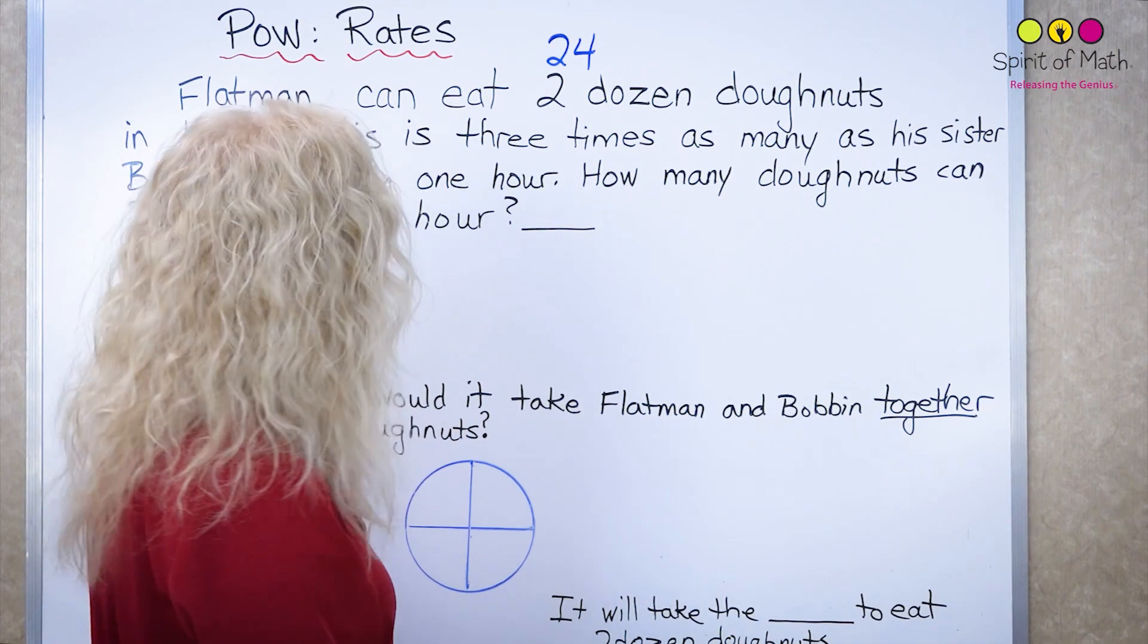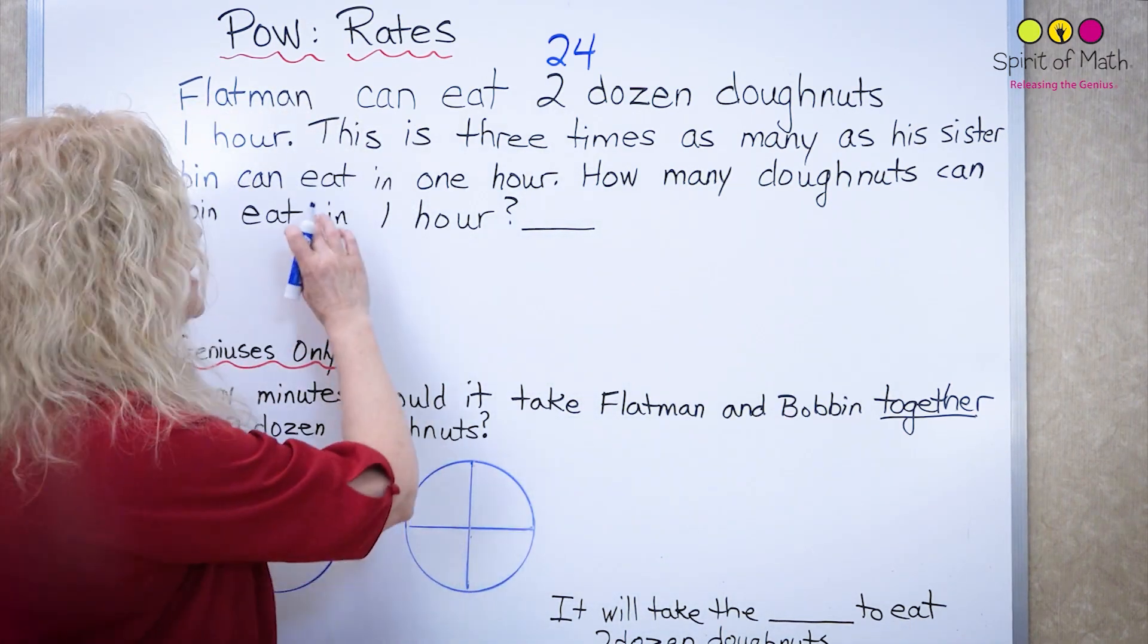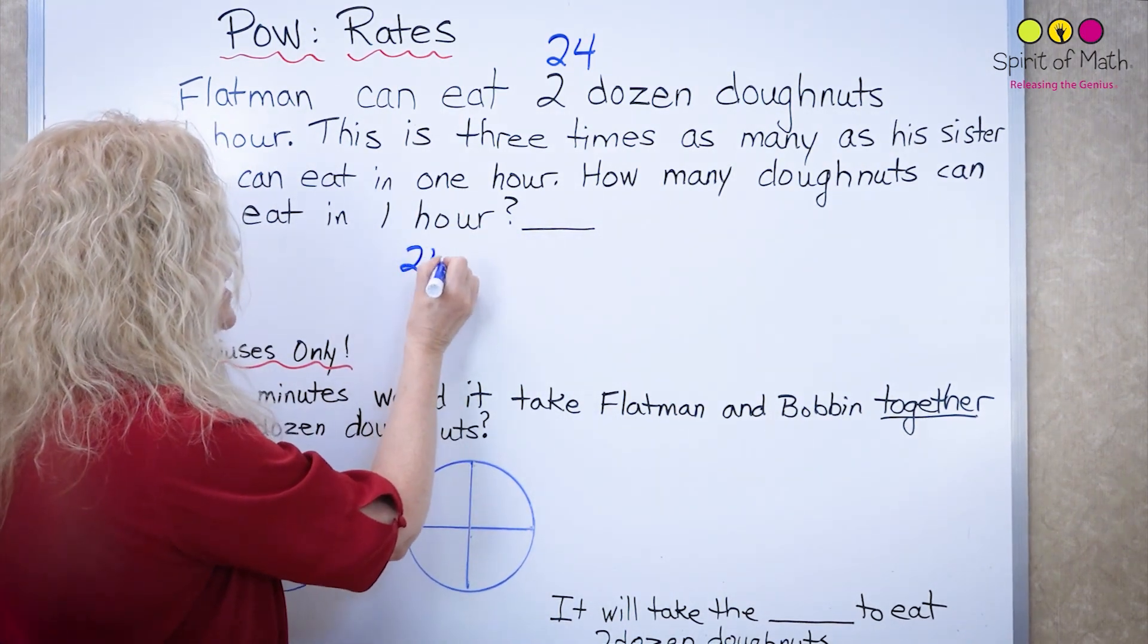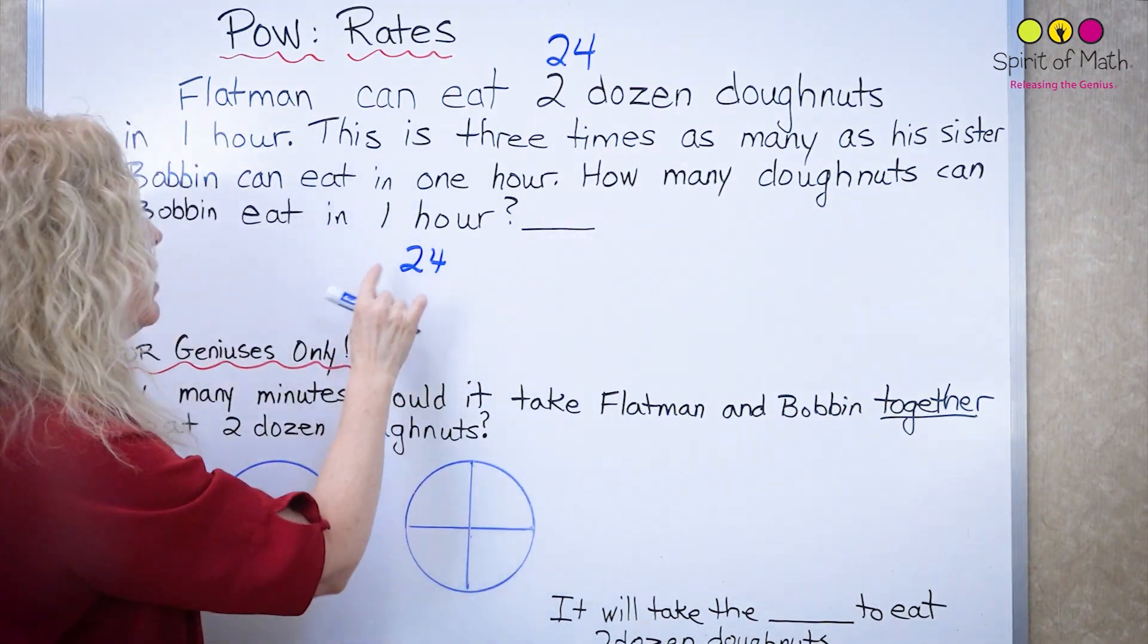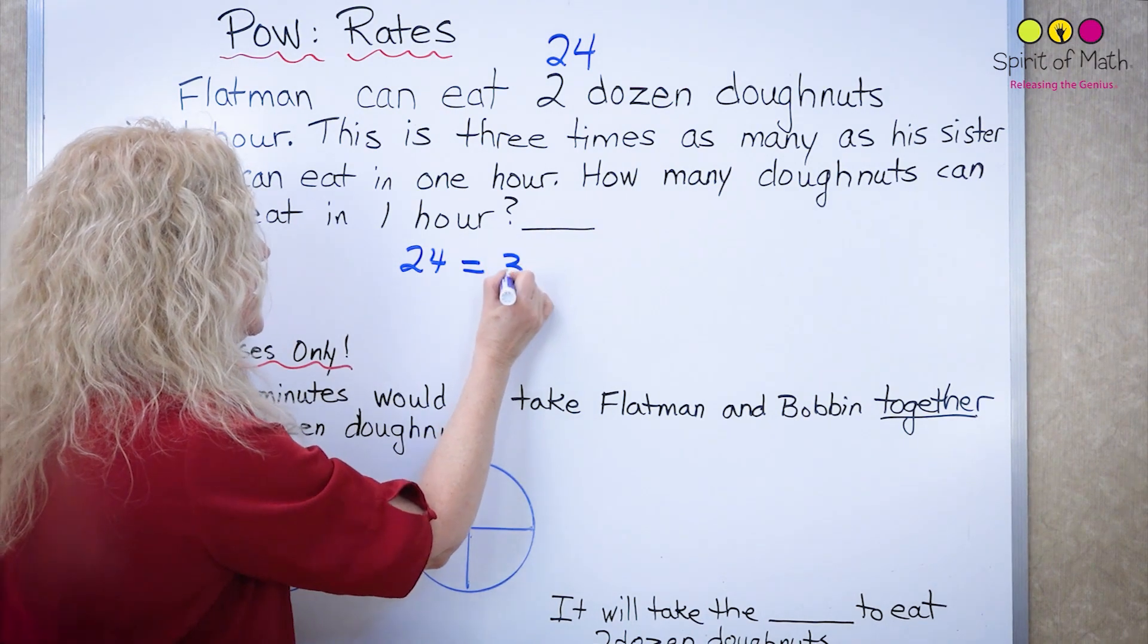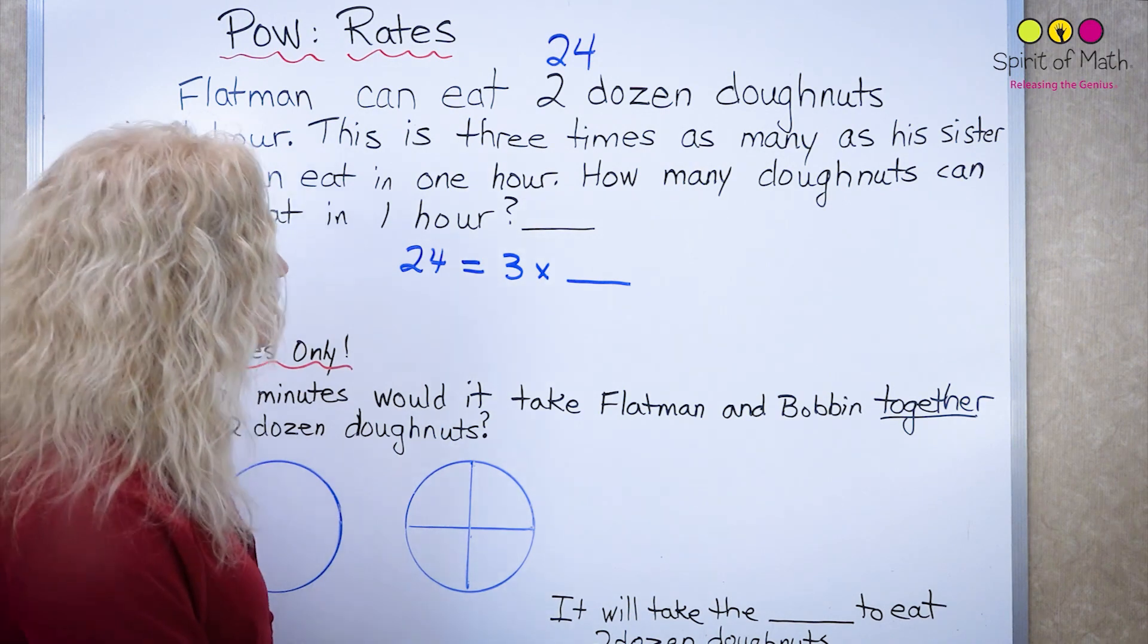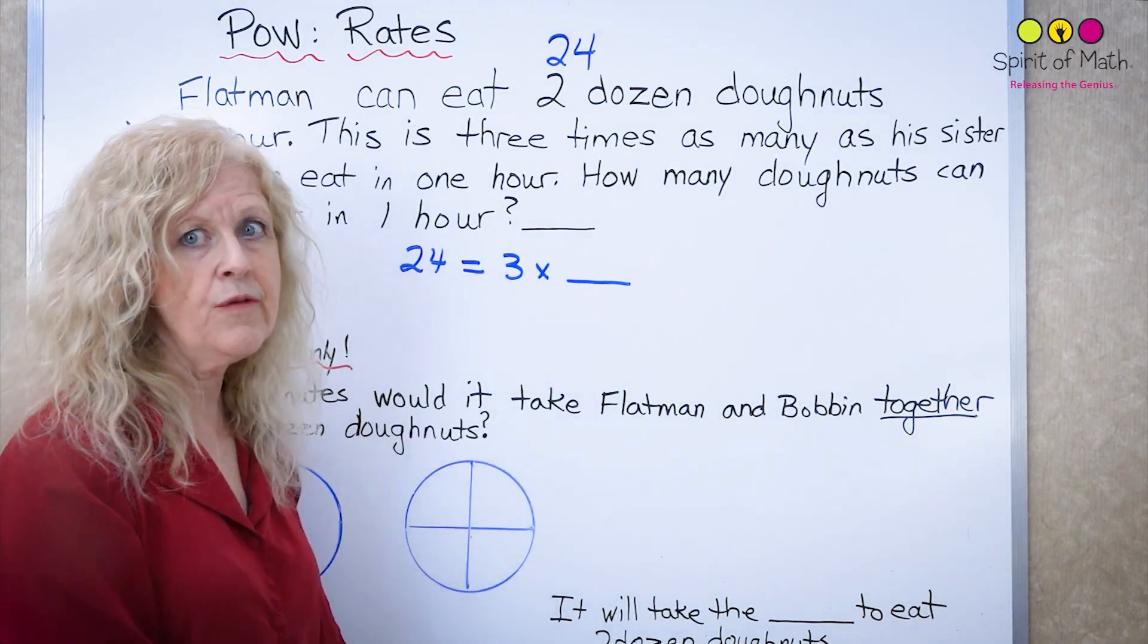So if Flatman can eat 24 doughnuts and this is 24, it says this is three times as many as his sister Bobbin can eat. So 24 is equal to three times as many as what Bobbin can do. So notice what I did. I said three times something is equal to 24.